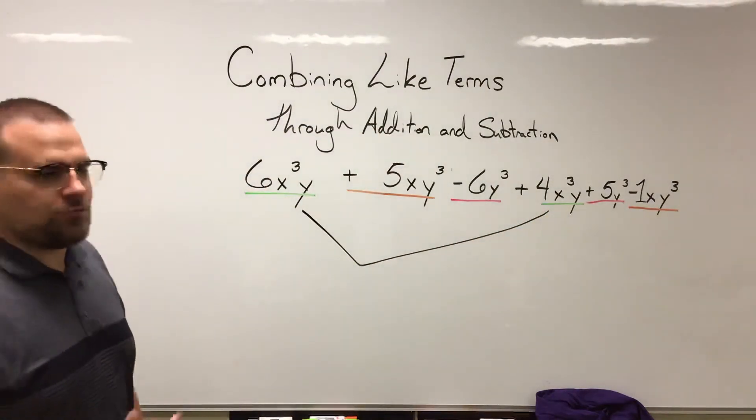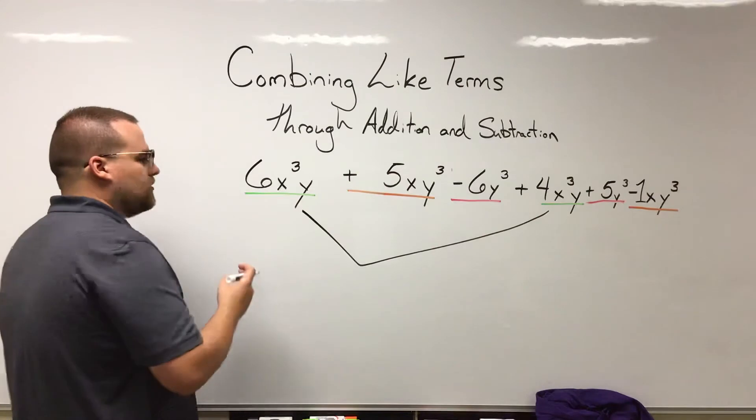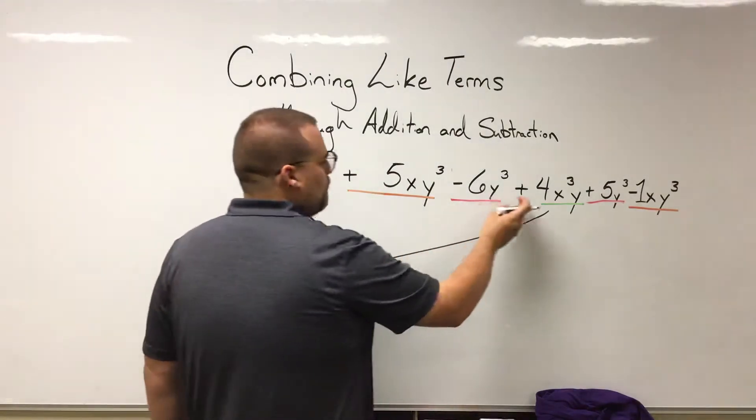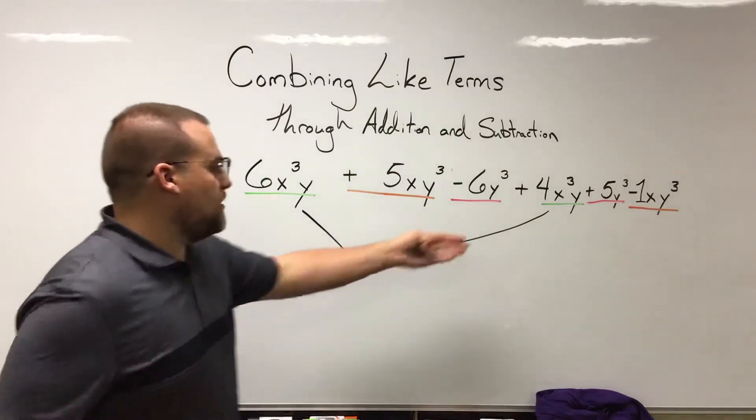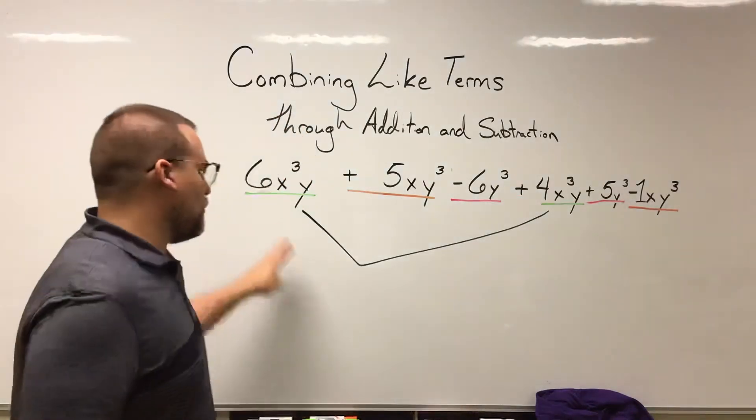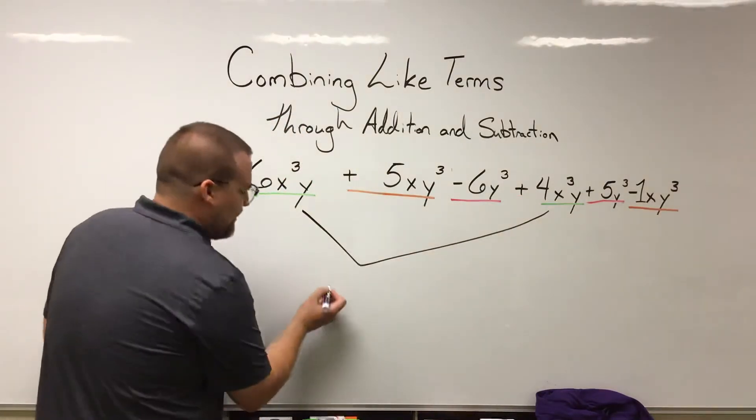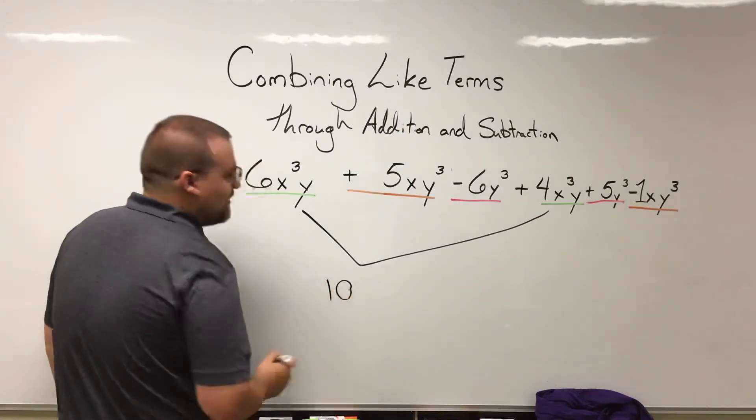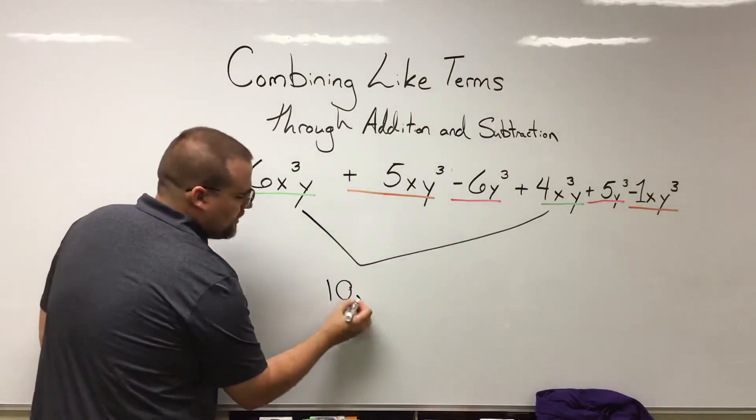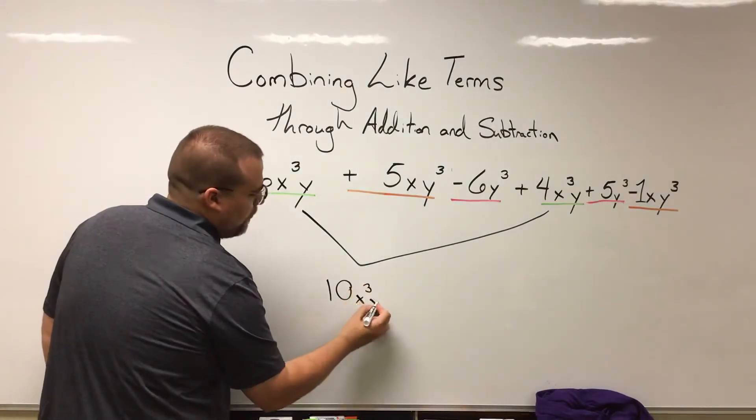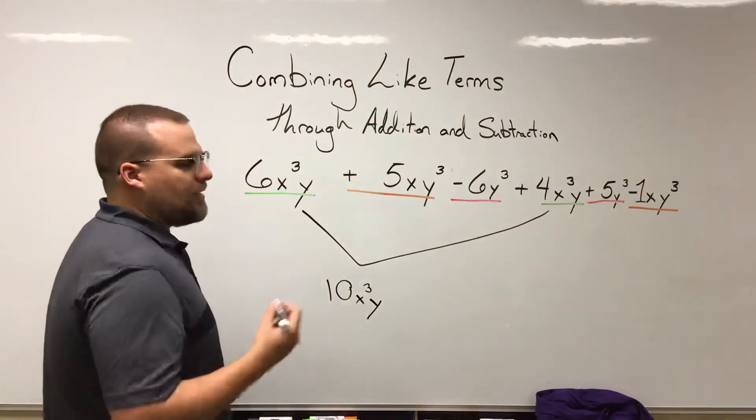As you guys know from our other videos, the coefficients will do the operation designated—in this case, addition because it is a +4. So 6 + 4, we are going to get 10, and the variables will not change during addition and subtraction. So 10X³Y.